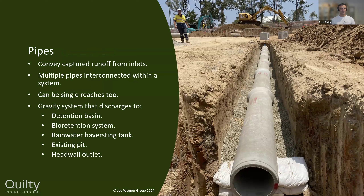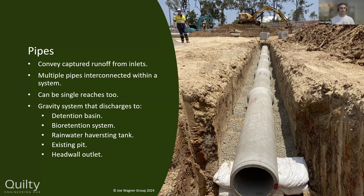Pipes convey captured runoff from inlets and discharge it to another location. You can have multiple pipes interconnected, or a single reach — from one point to another with no change of direction or grade, essentially one long conduit. Single reaches get into the space of culverts, which is another session. These gravity systems need to freely discharge, ultimately to a detention basin, bioretention system, rainwater harvesting tank, existing pits, or a headwall outlet.